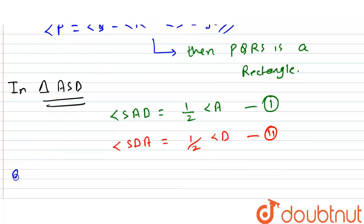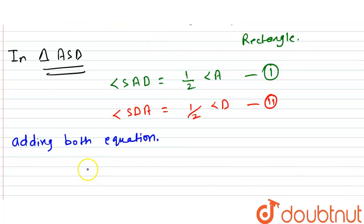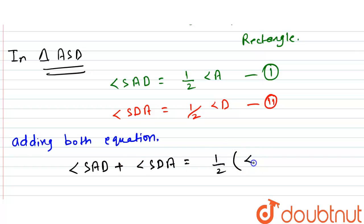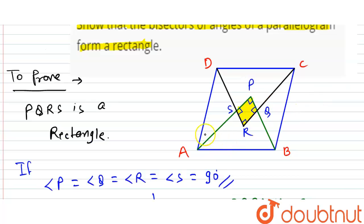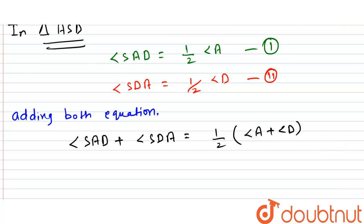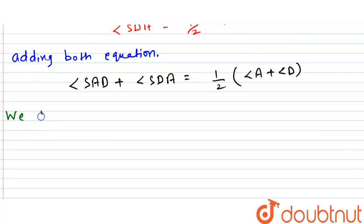Adding both equations, we get angle SAD + angle SDA = half of (angle A + angle D). Now, what is angle A + angle D? Since ABCD is a parallelogram and AD is a transversal line, we need to consider the sum of co-interior angles.